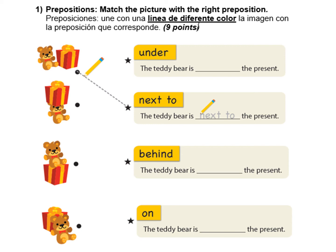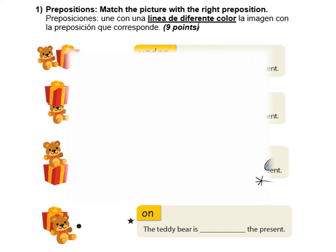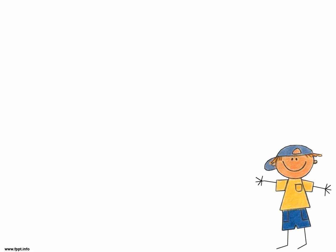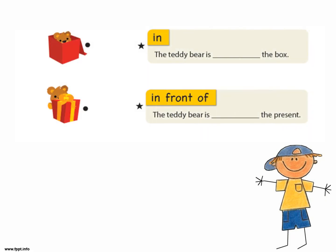Entonces, chiquillos, acá ustedes van a tener que ver y seguir el ejemplo. Y acá nos quedan las dos últimas partes de la guía, que son los otros ositos. Me aparece in y me aparece in front of.